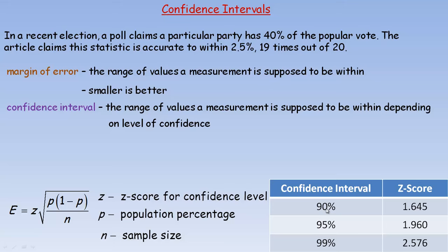Basically if you have a standard normal table, this means that this is the middle 90%, and the z-score is actually 1.645 to give you the middle 90%. For 95% it's 1.96. So basically what that means is from a z-score of 1.645 to negative 1.645, there's 90% of the data. From 1.96 to negative 1.96 is 95% of the data, so that's where you get those confidence interval z-scores from.